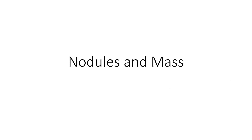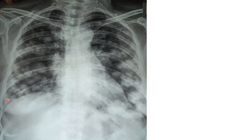Focusing on the lung parenchyma in both lung fields, you can see multiple nodular opacities. A nodule is defined as a round or irregular opacity that is either well-defined or poorly defined, but less than three centimeters in diameter. If it is greater than three centimeters in diameter, it is referred to as a mass lesion. In this X-ray you can see many nodules.